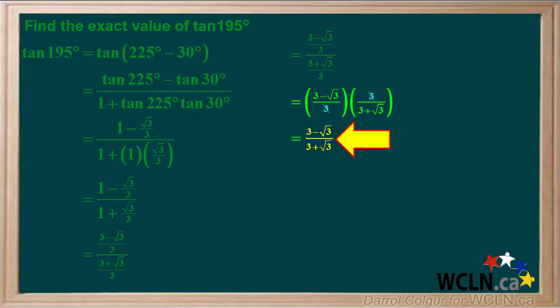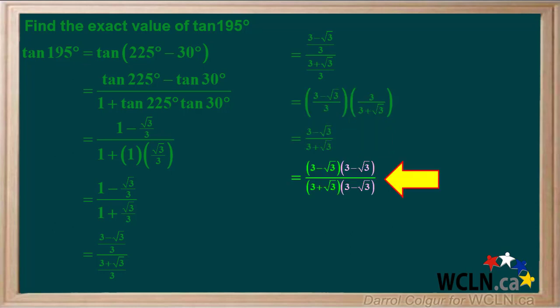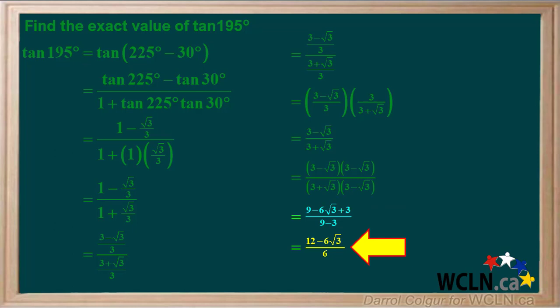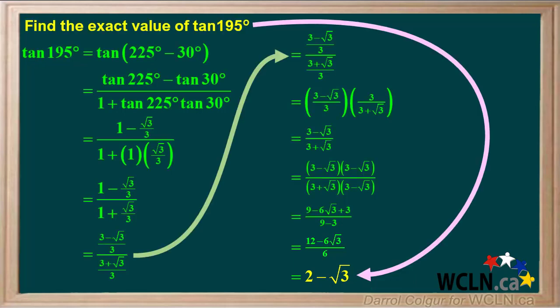Cancelling the 3's gives us (3 − √3) / (3 + √3). We'll multiply both the numerator and denominator by the conjugate of the denominator, which is 3 − √3. Carrying out the multiplications gives us 9 − 6√3 + 3 for the numerator and 9 − 3 for the denominator. This comes out to (12 − 6√3) / 6, which simplifies to 2 − √3. So we can state that the exact value for the tangent of 195 degrees is 2 − √3. This can be verified using a calculator.